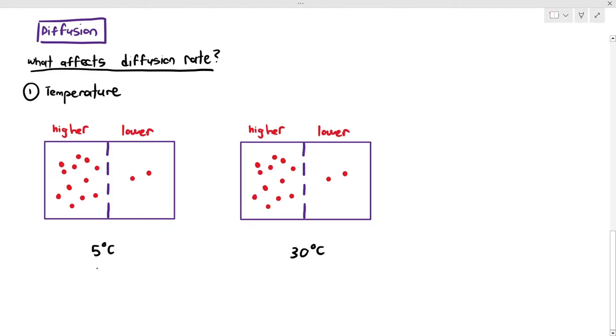And in both cases, the particles will move from left to right because it's a higher concentration to lower concentration. But in which case will diffusion happen faster? The answer is obviously the second diagram at 30 degrees Celsius, because when there is a higher temperature, the particles will gain higher kinetic energy. And when it gains a higher kinetic energy, it is then able to diffuse at a faster rate. Simple as that.